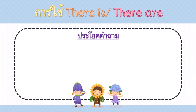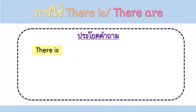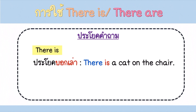เรามาดูการเปลี่ยนประโยค There is / There are ให้เป็นประโยคคำถามกันค่ะ ประโยคคำถามทำได้ง่ายๆ เพียงแค่สลับ Is หรือ Are มาไว้ข้างหน้า There และท้ายประโยคต้องเติมเครื่องหมาย Question Mark ค่ะ เราลองมาดูตัวอย่าง ประโยคบอกเล่าเราแต่งว่า There is a cat on the chair แปลว่า มีแมวหนึ่งตัวอยู่บนเก้าอี้